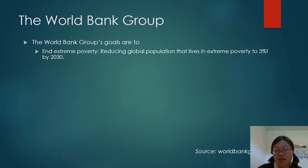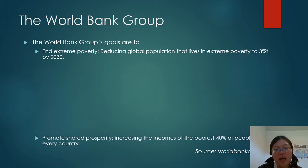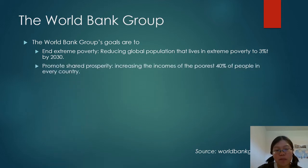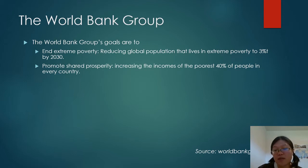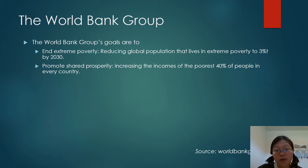They define ending extreme poverty as reducing the global population living in extreme poverty to 3% by 2030, and promoting shared prosperity as increasing the incomes of the poorest 40% of people in every country. You can see that these two goals focus on improving people's income and also on improving equality.